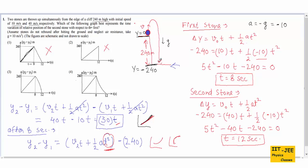In a position-time graph, the slope represents velocity. After 8 seconds, the second stone is still falling and its velocity is increasing. So we need the graph whose slope is increasing after 8 seconds. In graph three, the slope is increasing at that point — this represents increasing velocity. In graph four, the slope is decreasing. Therefore, graph three is the correct answer. I hope you understand the concept.